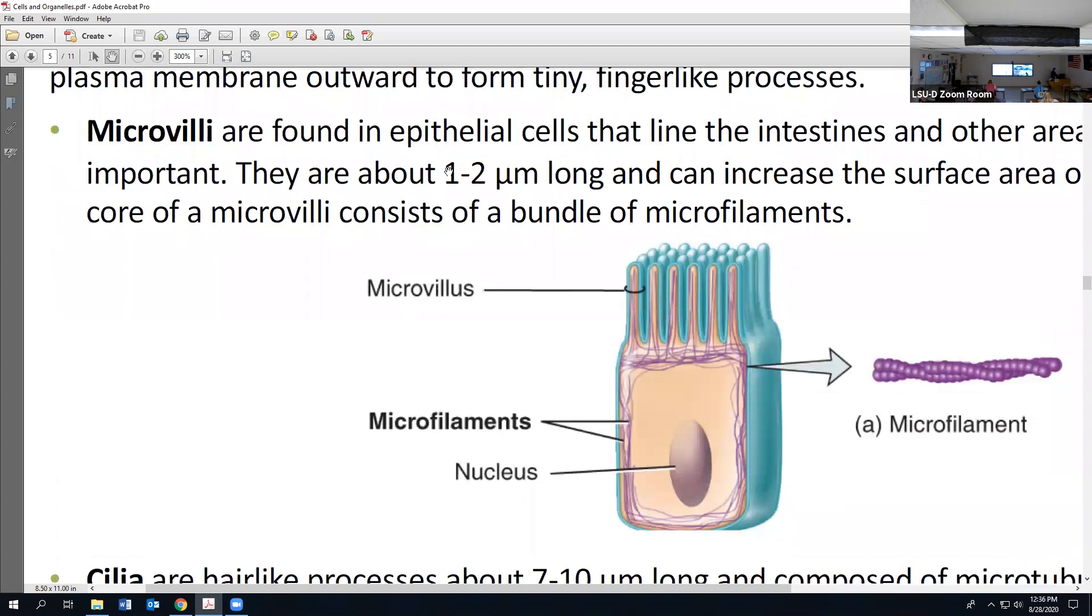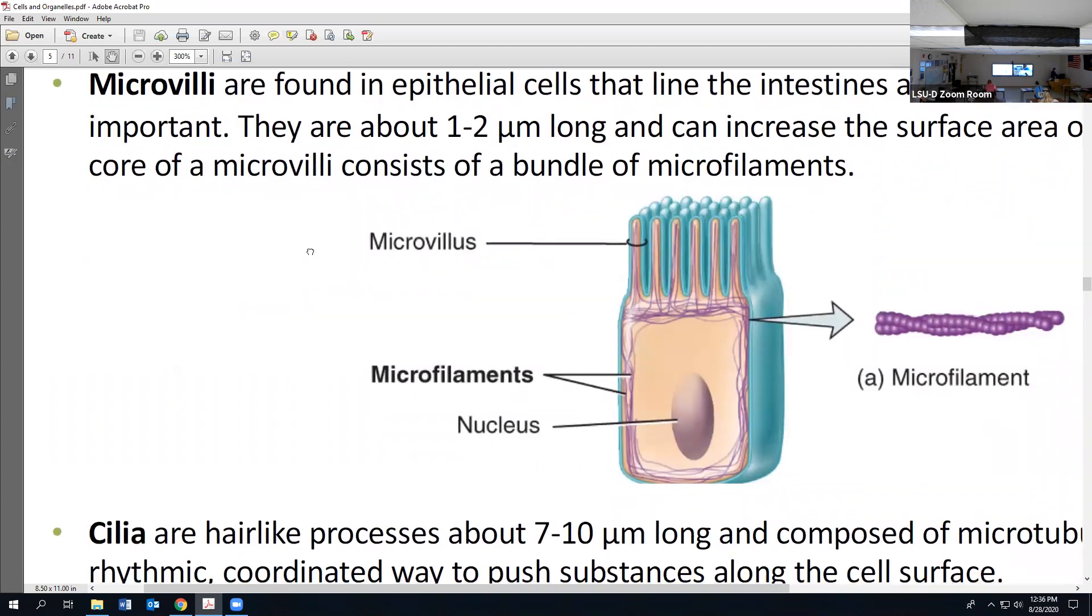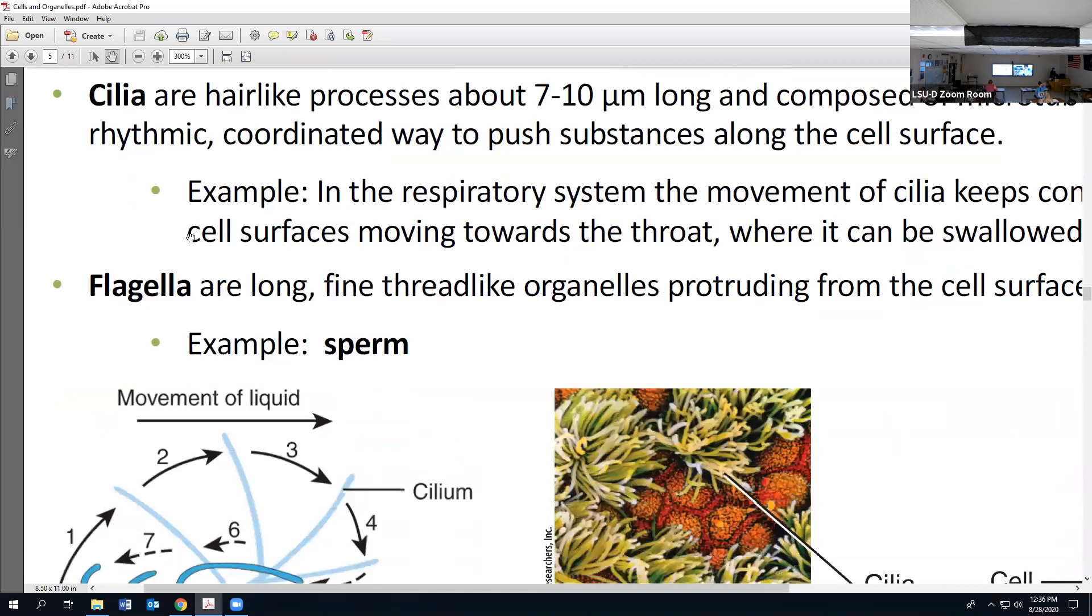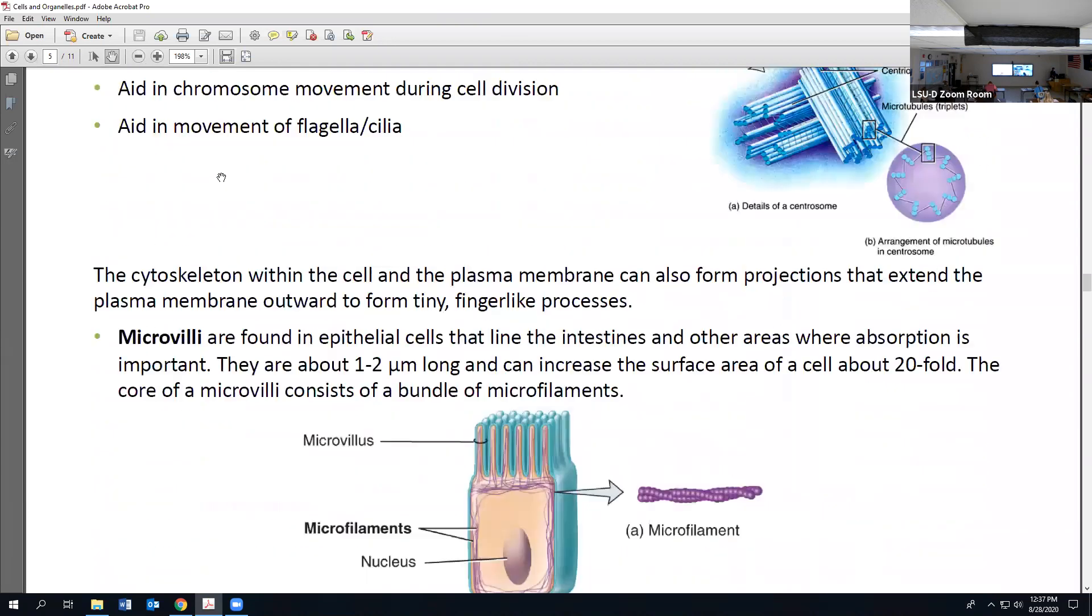Microfilaments generate movement - in parentheses it says muscle contraction, cell division, and cell locomotion because some cells can move. They provide much of the mechanical support responsible for basic strength and shape of the cells. You can see they're kind of on the outside of the cell. What we're going to talk about on the next page are extensions of the cells like microvilli.